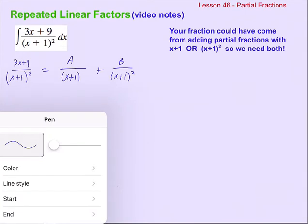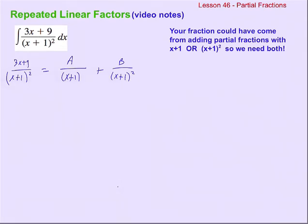But once we write that out, solving it is exactly like what we did in our previous examples with partial fractions. We're going to multiply both sides by x plus one squared. For the first fraction, we have to actually multiply by x plus one — we distribute that A — because only one of the x plus ones will cancel out. In the second fraction, both x plus ones will cancel out.